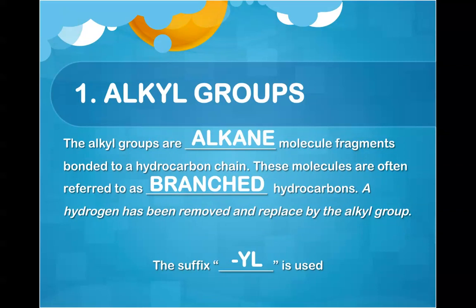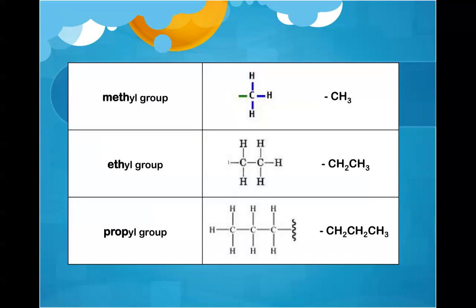We're going to be looking at something called an alkyl group. This is referred to as a branch hydrocarbon molecule where we have extra molecule fragments bonded to our hydrocarbon chain, and we're going to be using the suffix -yl. Here are three common groups. We only need to really worry about methyl, ethyl, and propyl. If we have just one carbon — CH3 attached to a chain — we refer to it as methyl. Two carbons is ethyl, and three carbons is propyl.